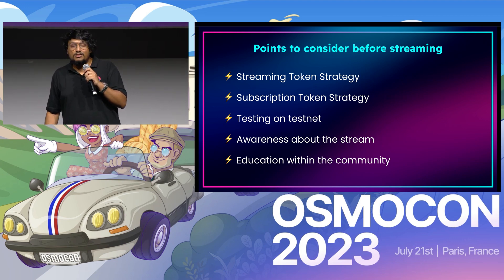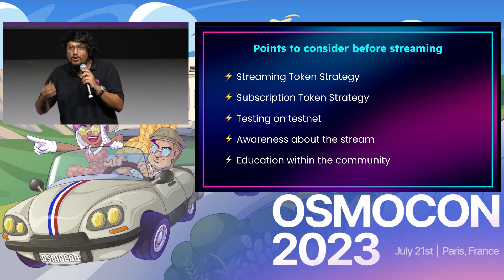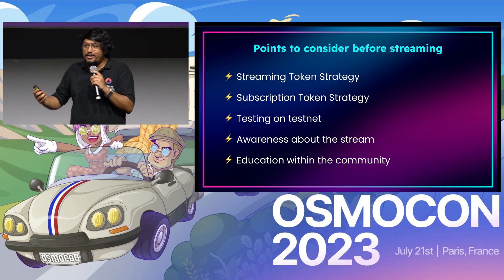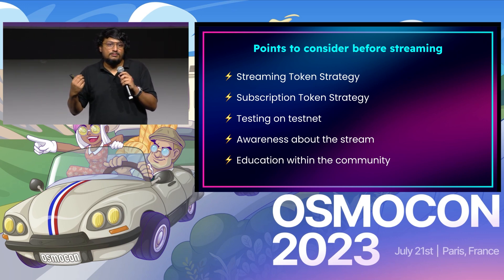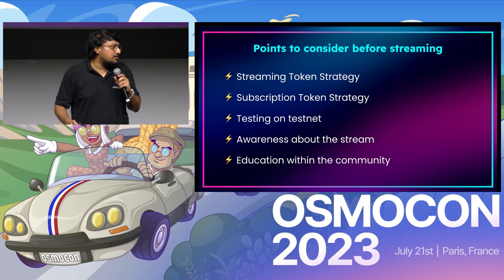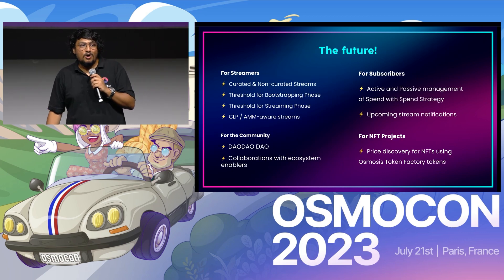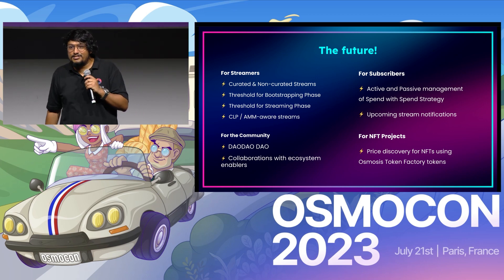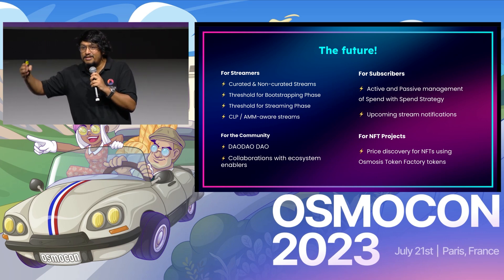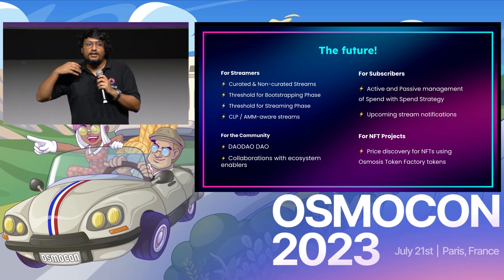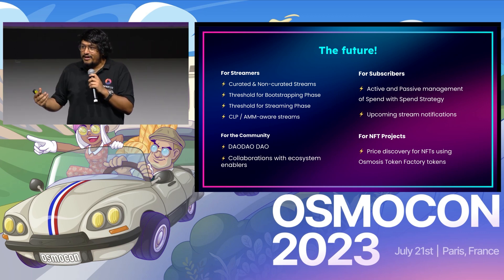Education within the community is also important because StreamSwap and Cosmos are still pretty new. People need to be educated, and we have excellent tools like Squid and Axelar that facilitate cross-chain transfers from across ecosystems. Looking at the future for StreamSwap: at this point in time, StreamSwap is curated on the front end so that the right streams make it to the ecosystem, but eventually this will be completely permissionless even on the front end.